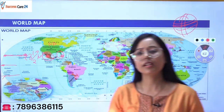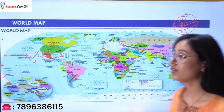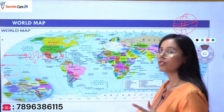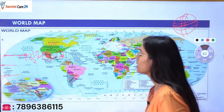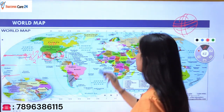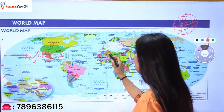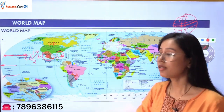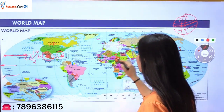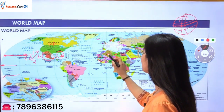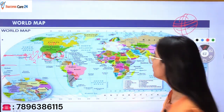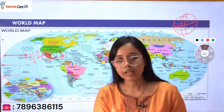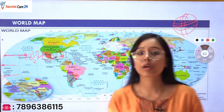Now coming to the African continent, there are seven countries where the Tropic of Cancer passes through. First is your Western Sahara, then Mauritania, then Algeria, then Libya, then Egypt, then Niger, and then Mali. So the seven African countries are: Western Sahara, Algeria, Libya, Egypt, Niger, Mali, and Mauritania — these are all the African countries where the Tropic of Cancer passes through.